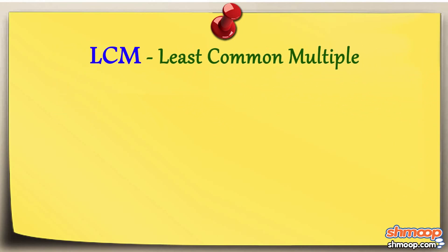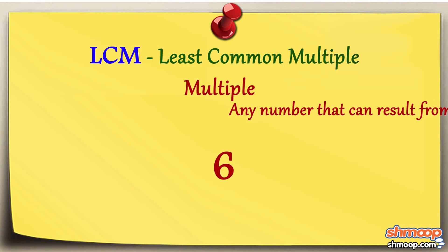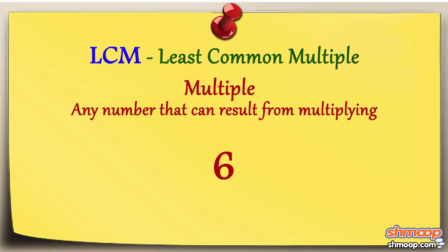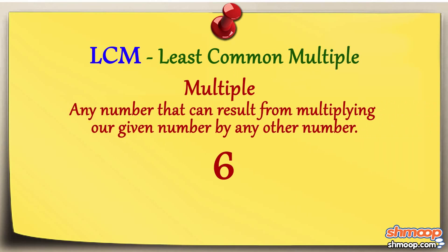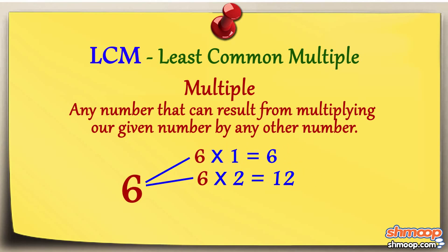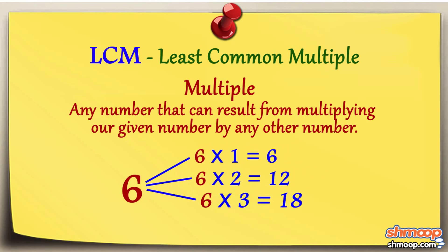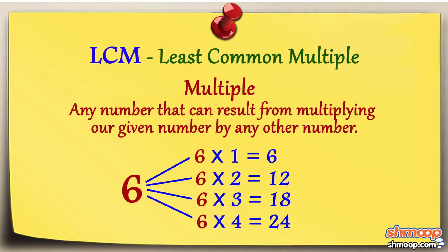First, we need to talk about what a multiple is. Say you've got the number 6. A multiple is any number that can result from multiplying our given number by any other number. For example, you can multiply 6 by 1 to get 6, by 2 to get 12, by 3 to get 18, by 4 to get 24, and so on. 6, 12, 18, and 24 are all multiples of 6.